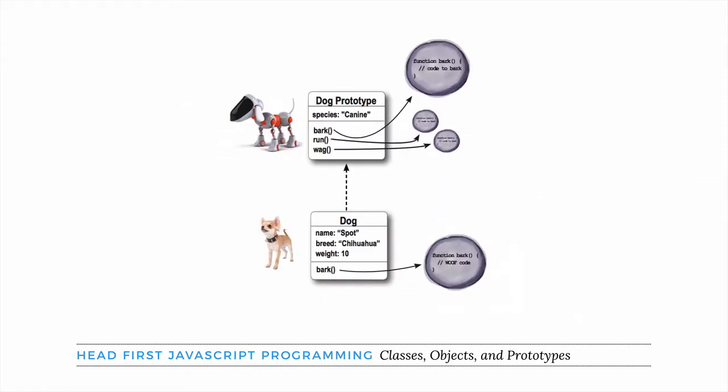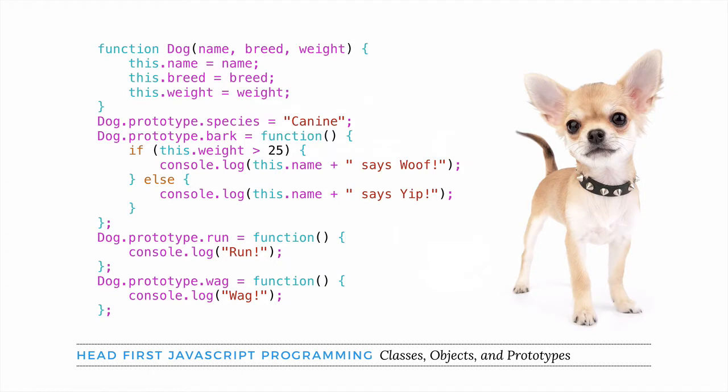We also show how you can override methods by adding methods to a dog instance rather than to the prototype, so you can create bark code that's specific to one dog — like Spot — without affecting the bark method for all the other dogs that are inheriting from the dog prototype. In the book, we use constructor functions like a function dog to create dog objects, and we add methods and properties to the dog prototype that all dogs should inherit, like the species property and the bark, run, and wag methods.